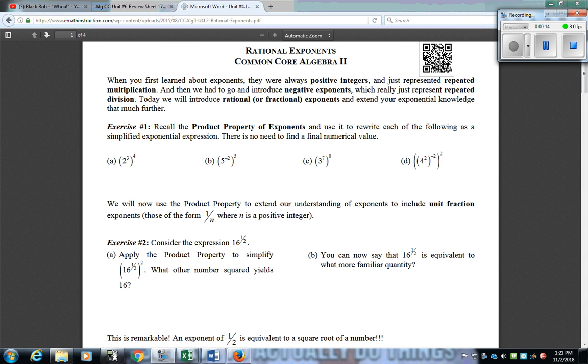Exercise 1 reviews the product property we talked about in the last video. We're talking about a power raised to a power, which is pretty much being multiplied. In this case, 2 to the 3rd raised to the 4th power would be 2 to the 12th.